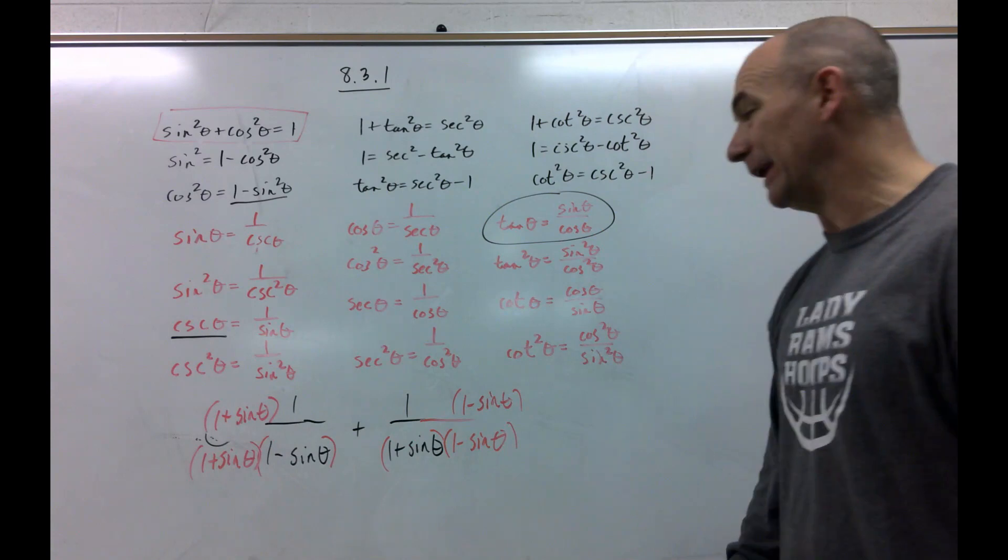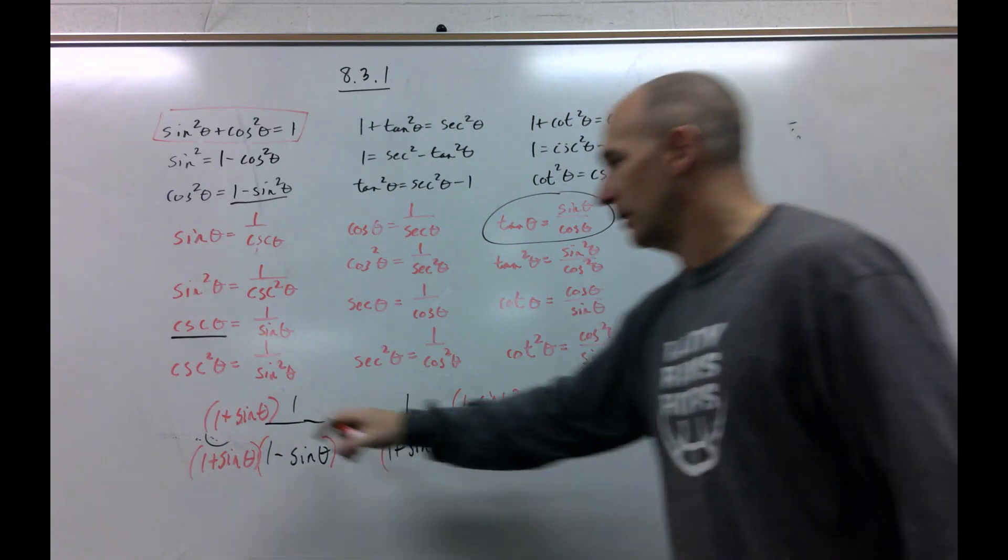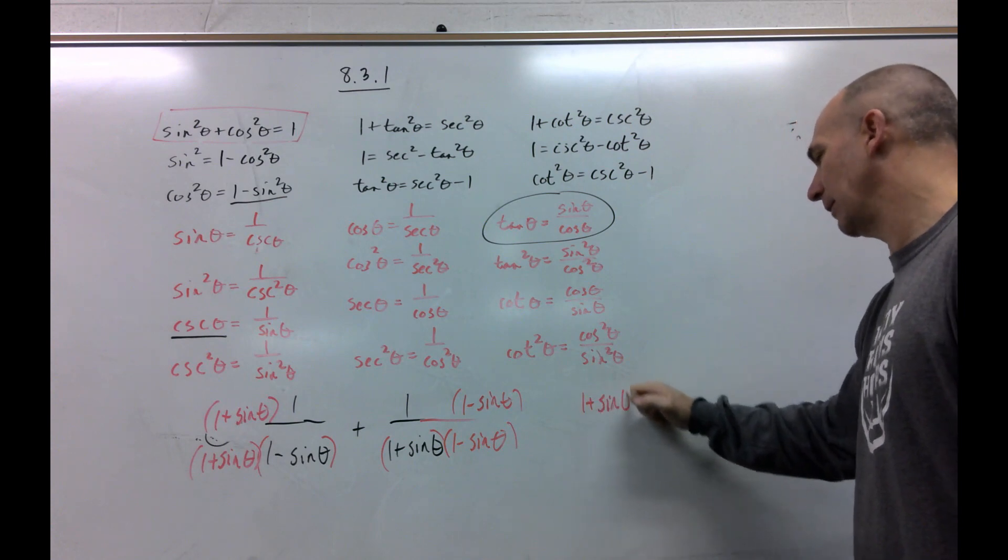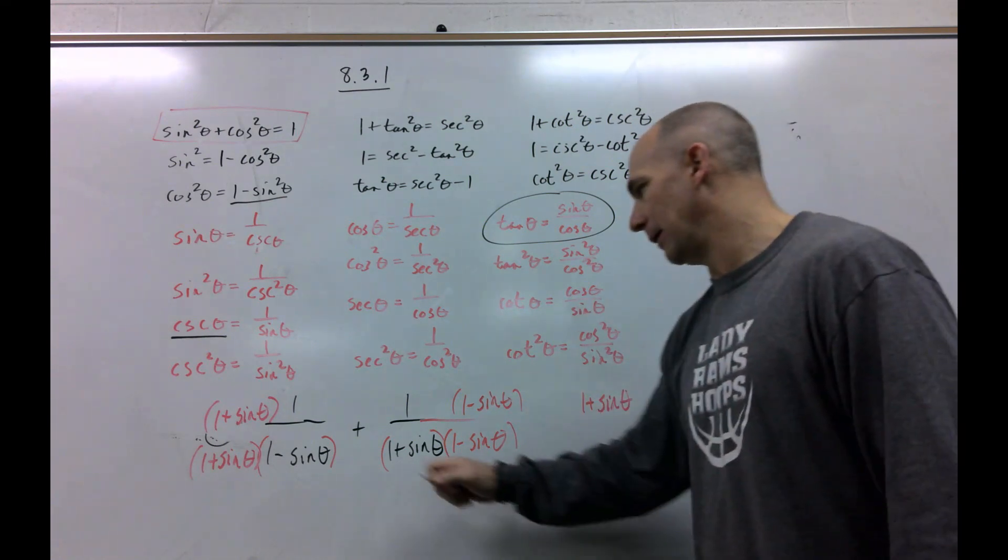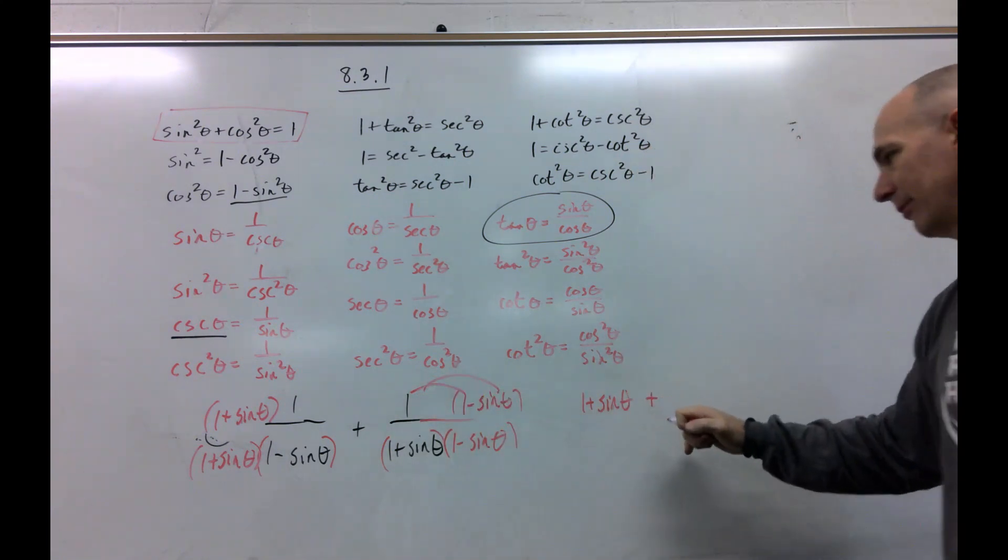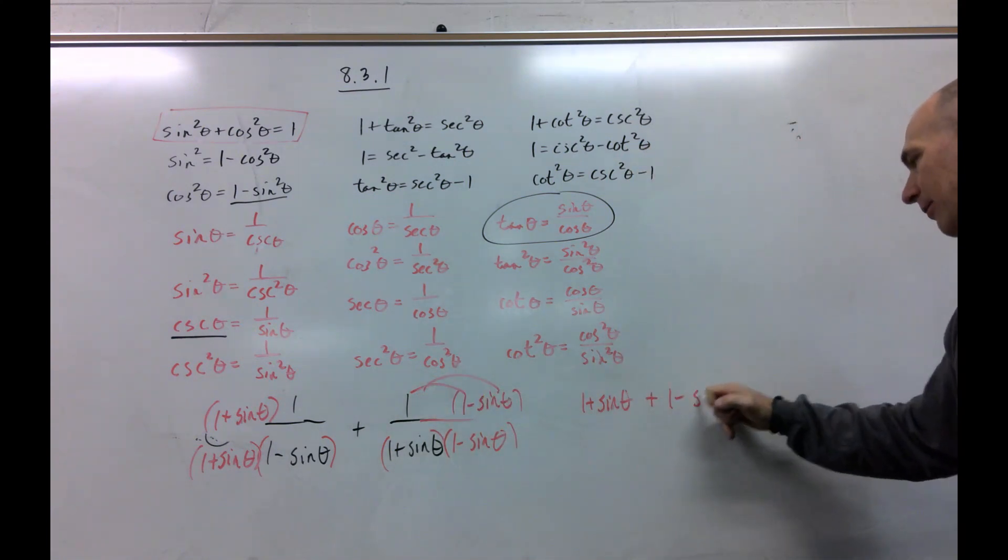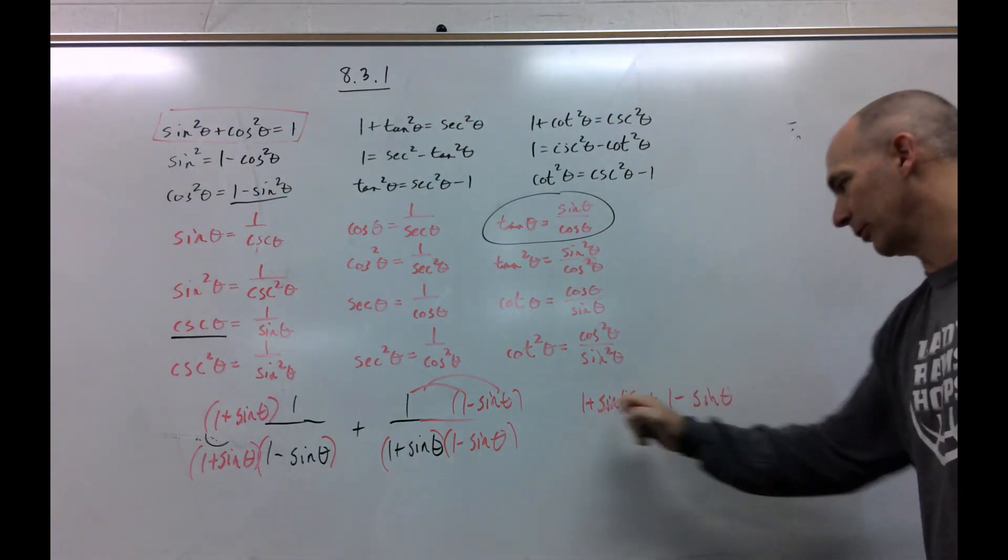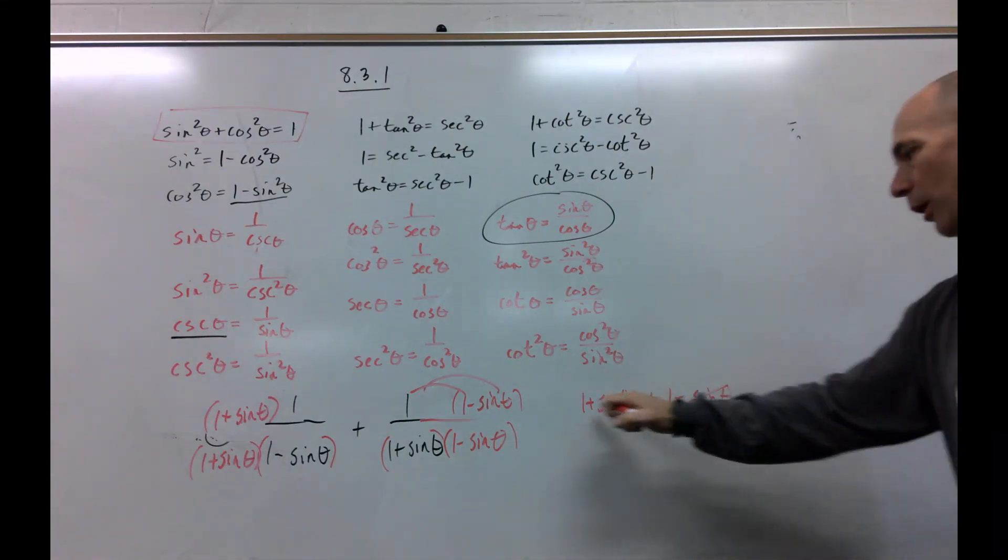Now, this is a little easier than the last one because I just distribute a one, and I get one plus sine of theta, and then notice I got one times this, one times this, so plus one minus sine of theta. Now, I'm just going to keep simplifying this because notice how the sines disappear. One plus one is two.